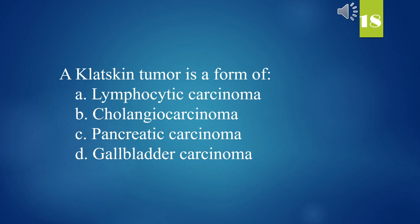A Klatskin tumor is a form of: A. Lymphocytic carcinoma. B. Cholangiocarcinoma. C. Pancreatic carcinoma. D. Gallbladder carcinoma. The answer is B. Cholangiocarcinoma.